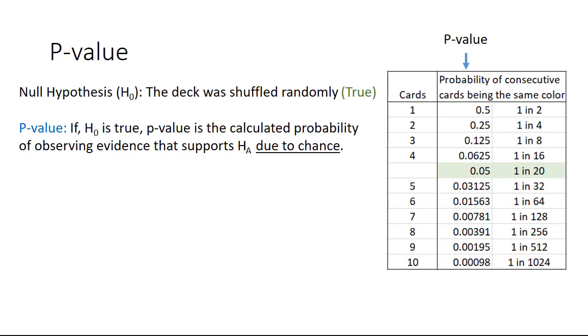Now let's assume that the null hypothesis was true. The deck was shuffled randomly, and we had been drawing black cards just because of random chance.